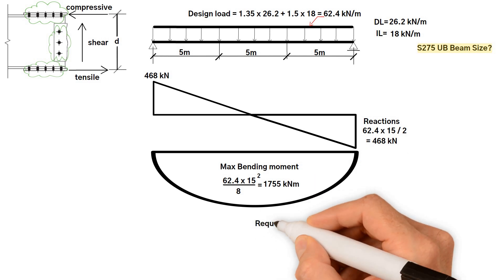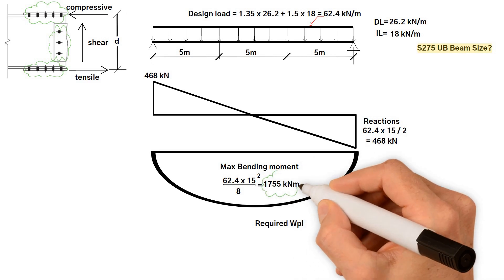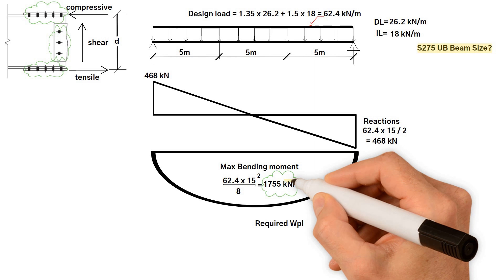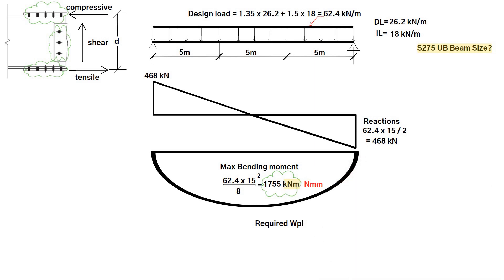Now we need to calculate the required plastic modulus, which equals the maximum bending moment divided by the yield stress. For S275 steel we can use a yield stress of 275 N per millimeter squared, which equals 1755. To make this easier, we need to convert this from kN per meter to N per millimeter. How we do this would be 1755 times 10 to 6 divided by the yield stress 275.